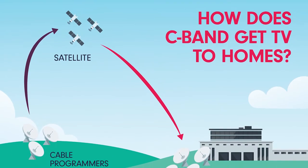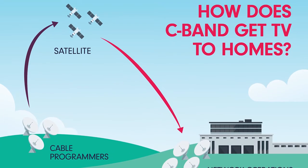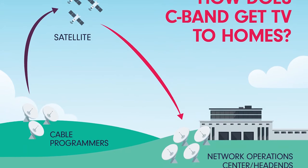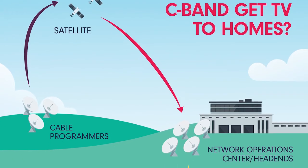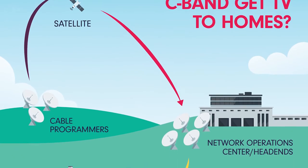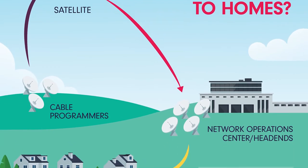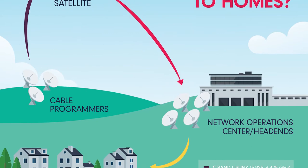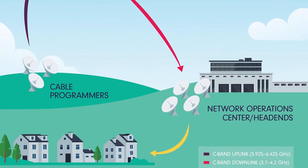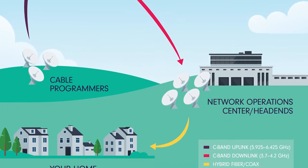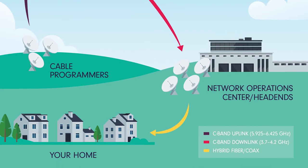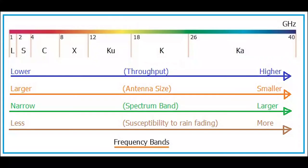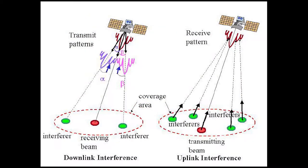Signals are received by one of the transponders tuned to that frequency range aboard the satellite. The transponder retransmits the signals back to Earth at a different frequency — a process known as translation — used to avoid interference with the uplink signal. This is typically in the KU band, but some still transmit in the C band: C band is 4–8 GHz, KU band is 12–18 GHz. The leg of the signal path from the satellite to the receiving Earth station is called the downlink.